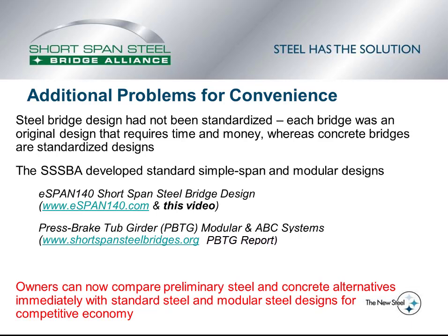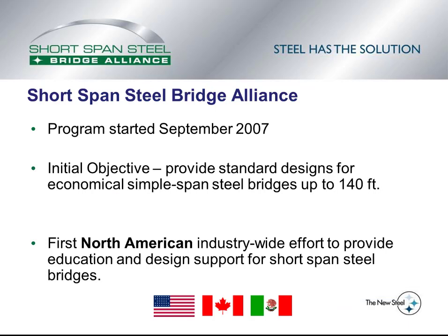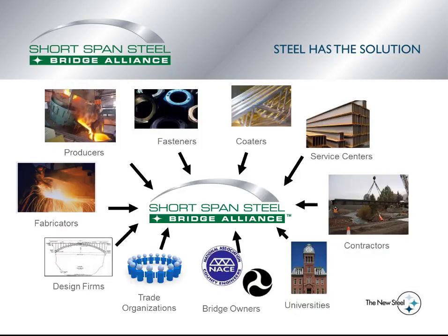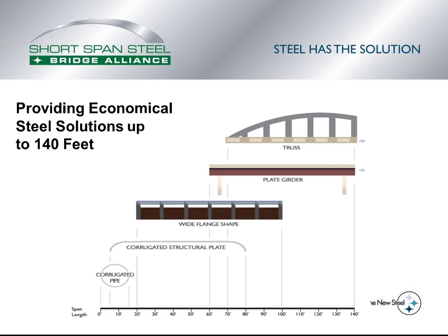The Shortspan Steel Bridge Alliance was developed to deal with these problems. The program started in 2007, with the initial objective to provide standard designs for economical simple span steel bridges up to 140 feet. It is the first North American industry-wide effort to provide education and design support for short span steel bridges, including the United States, Canada, and Mexico. The Alliance is made up of stakeholders involved with steel bridge construction, including producers, fabricators, design firms, contractors, service centers, coaters, fasteners, and universities. The purpose is to provide economical steel solutions up to 140 feet.